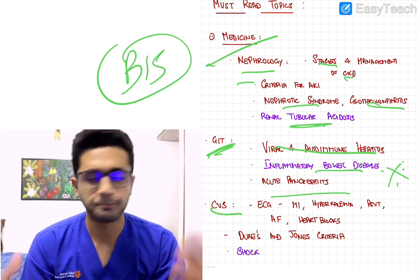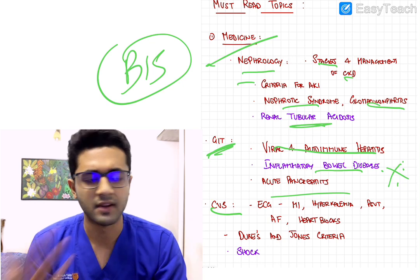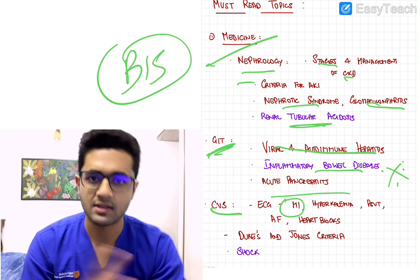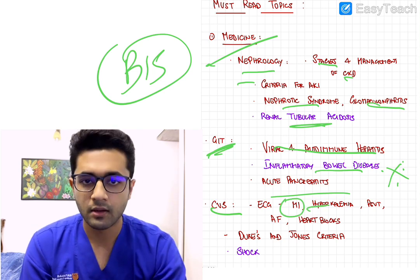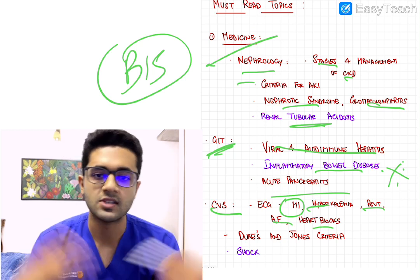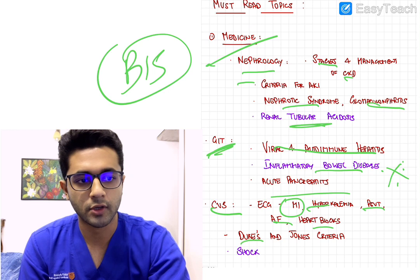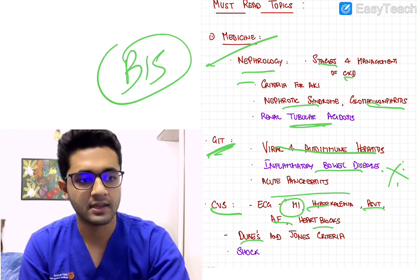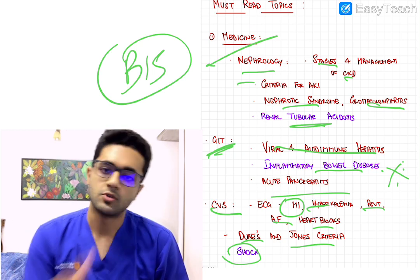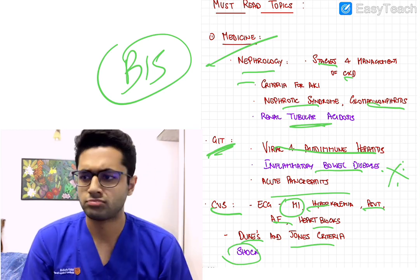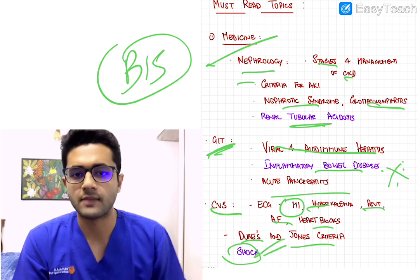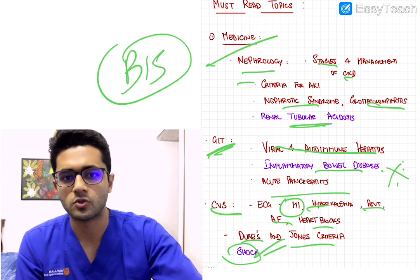In CVS, ECG — as expected, every year there's at least one ECG question asked. Make sure you're able to identify MI-related ECGs, STEMI and NSTEMI. Hyperkalemia is frequently asked, as are PSVT, AF, and heart blocks — ECGs usually given for identification. Important to know the Duke's criteria for infective endocarditis and Jones criteria for RHD. Probably the most important topic from CVS — which is also multi-subject, appearing in surgery, medicine, physiology, and pathology — is shock: types of shock and how to manage them.